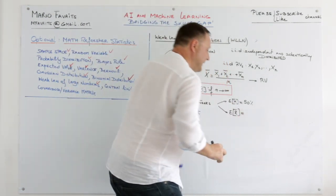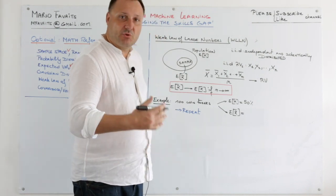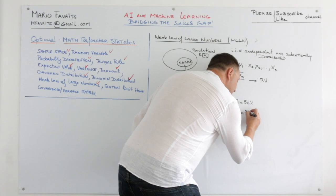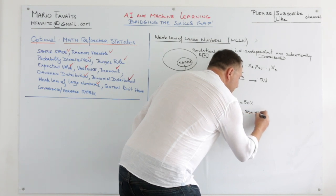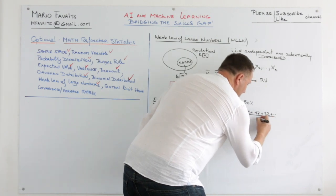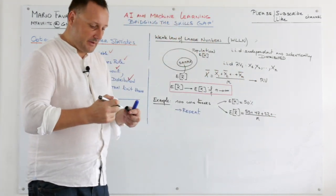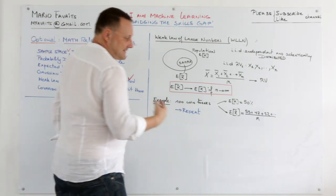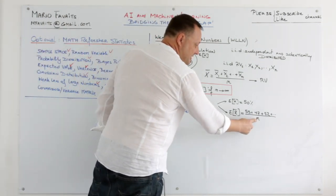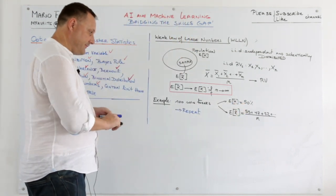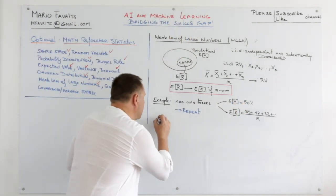what we can do is calculate the sample mean for each of the experiments. So at some point you can have 55 plus 47 plus 52 and so on. And you divide by the number of experiments. Now what we say is that if n is large enough, the sample mean will converge to the population. So let's take a look here.